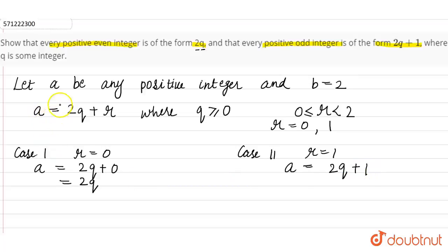If you can see in this question, there are two cases where R is 0 and R is 1. 2Q is obviously divisible by 2. Any number which is divisible by 2 are even numbers. So this shows that positive even integers are of the form 2Q.